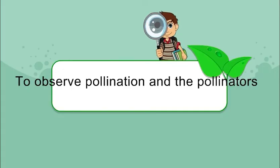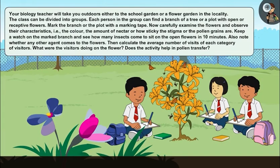To observe pollination and the pollinators, your biology teacher will take you outdoors either to the school garden or a flower garden in the locality. The class can be divided into groups. Each person in the group can find a branch of a tree or a plot with open or receptive flowers.